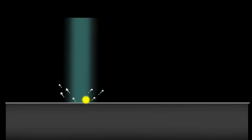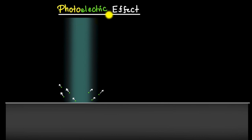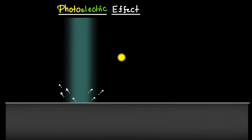If you shine particular kinds of light on certain metals, electrons will be ejected. We call this the photoelectric effect because light is 'photo' and electrons being ejected is 'electric.' This was one of the key experiments that actually helped us discover a completely new model of light. But how exactly? Well, let's find out.